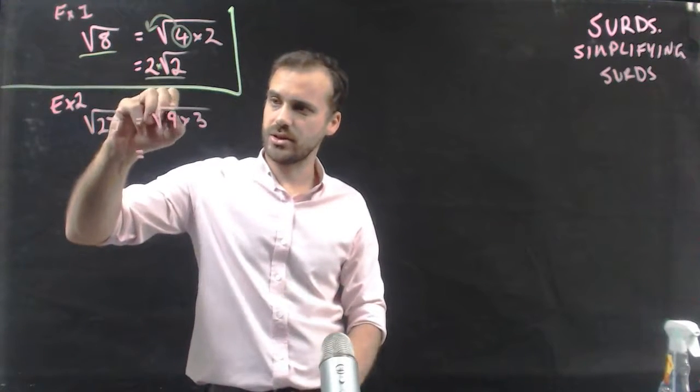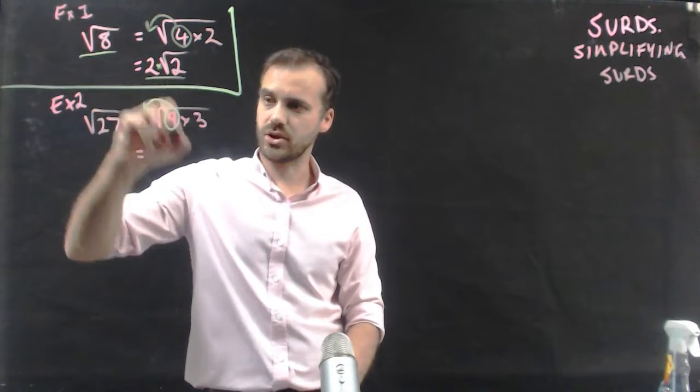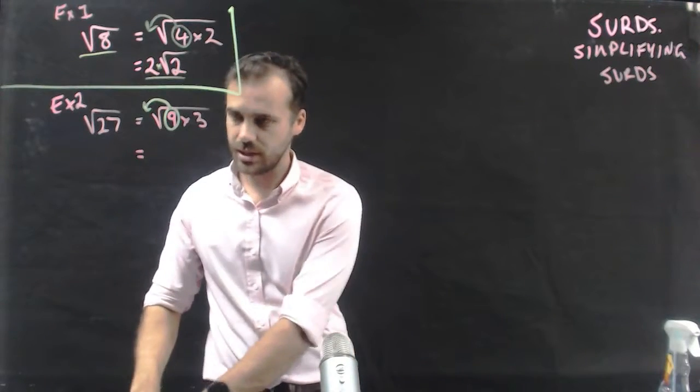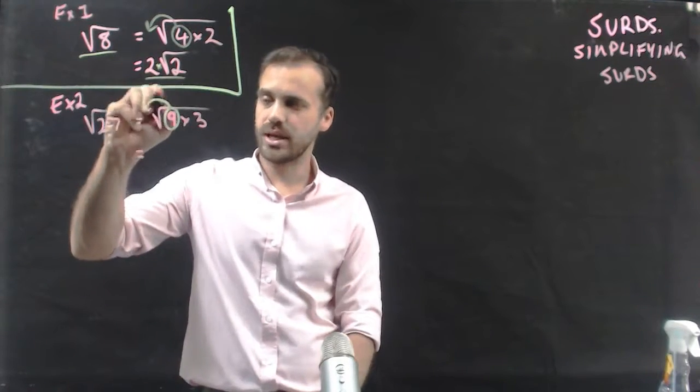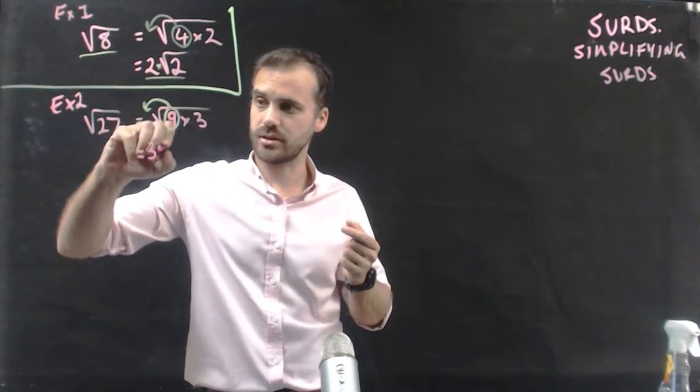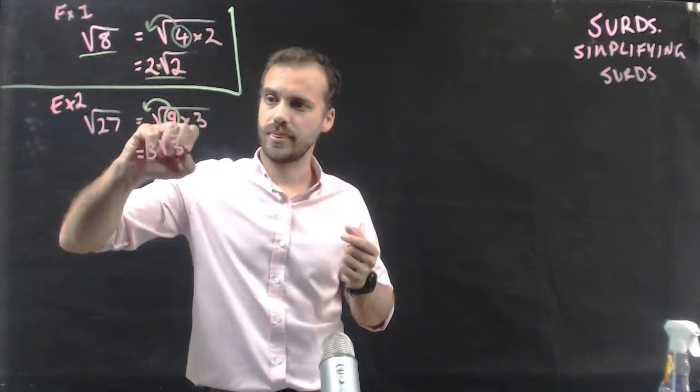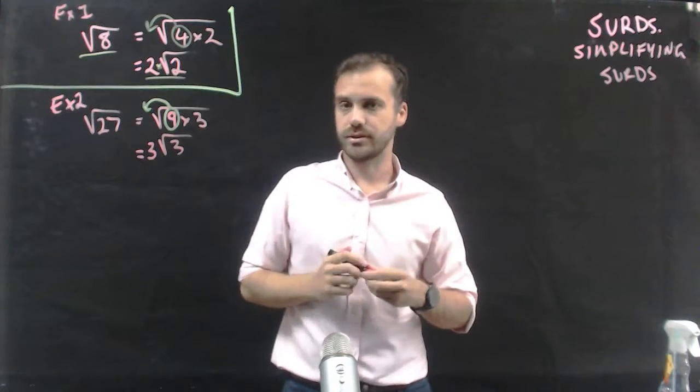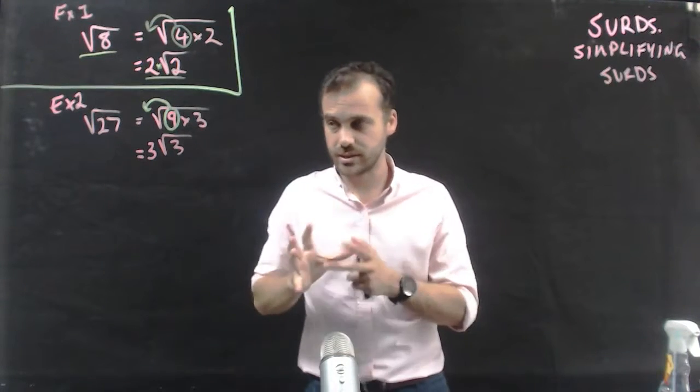So, I can take this 9 and move it outside of the square root, and I'll end up with, when the 9 comes out of the square root, the square root of 9 is 3. So, I'll end up with 3 root 3. Okay. That's simplifying.